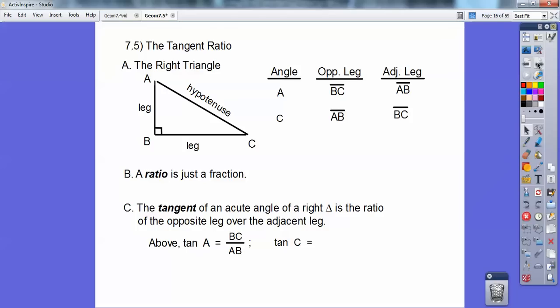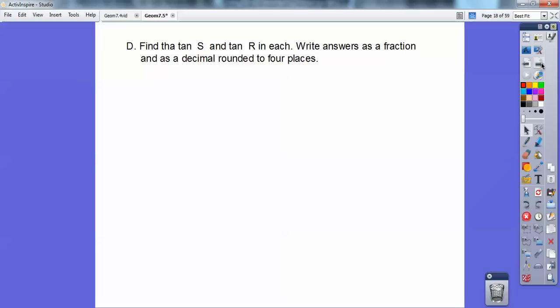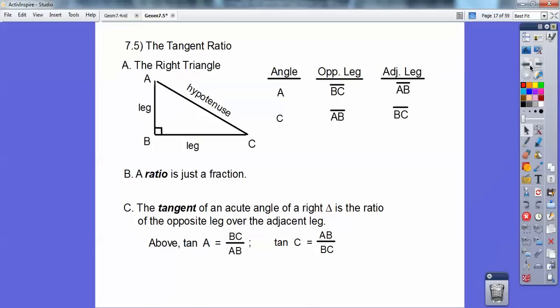The tangent of angle C is opposite. So here's angle C. Here's opposite. So that's going to go on top over the adjacent. It goes on the bottom. So easy enough. All right, so let's find—oops, let me go back. So it's AB over BC.